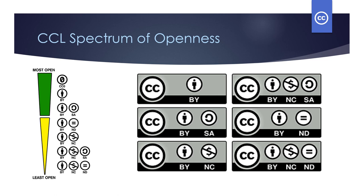On this slide, we see visualizations of the CCL spectrum of openness. The image on the left shows the spectrum of licenses with public domain represented at the very top — it is the most open and permissive of copyright concepts. The image on the right shows the visualizations or buttons of the six CCLs: the top left is Attribution; below that is Attribution ShareAlike; the bottom left is Attribution No Derivatives; the top right is Attribution Non-Commercial; below that is Attribution Non-Commercial ShareAlike; and the bottom right is Attribution Non-Commercial No Derivatives.